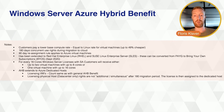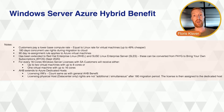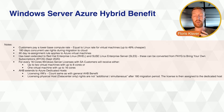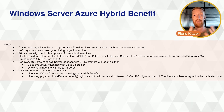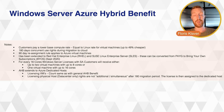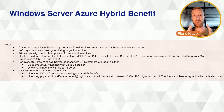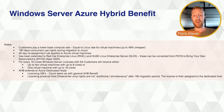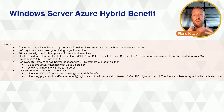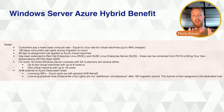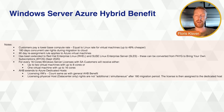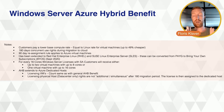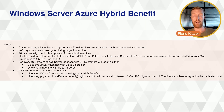With licensing Windows Server Datacenter and Standard with Software Assurance, you get something called the Windows Server Azure Hybrid Benefit. Basically, Microsoft has a Software Assurance benefit to help you reduce costs within Azure. If you have any server licenses with Software Assurance and you're going to migrate your environment to Azure, you can use those licenses with SA to reduce costs within your Azure environment.